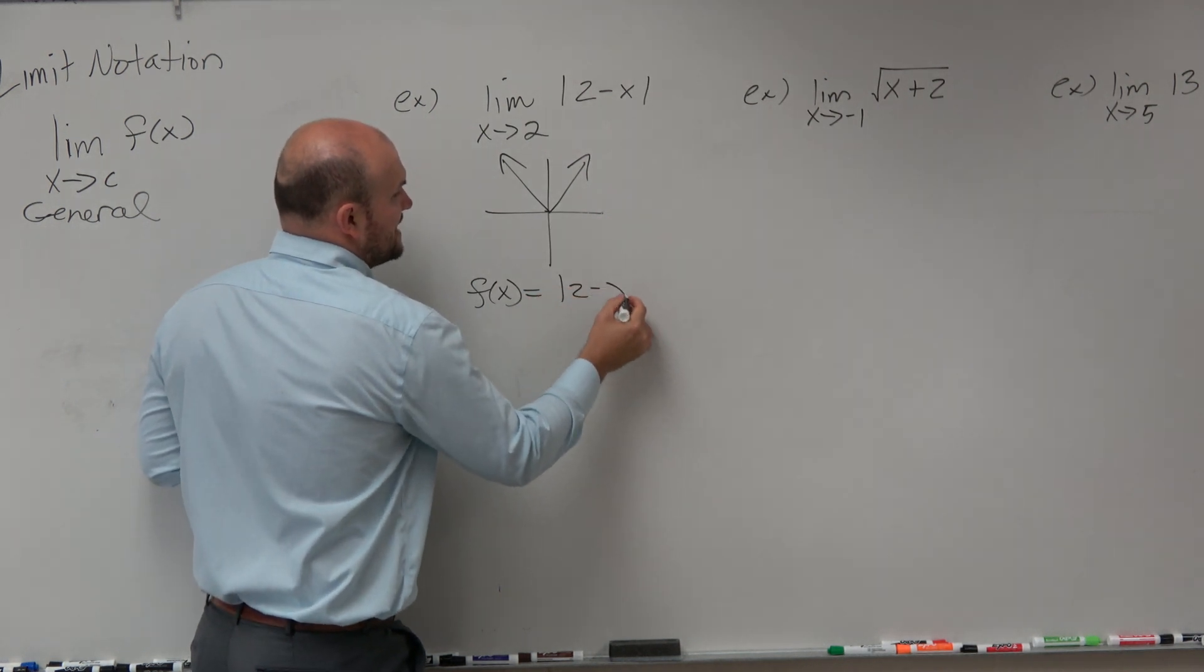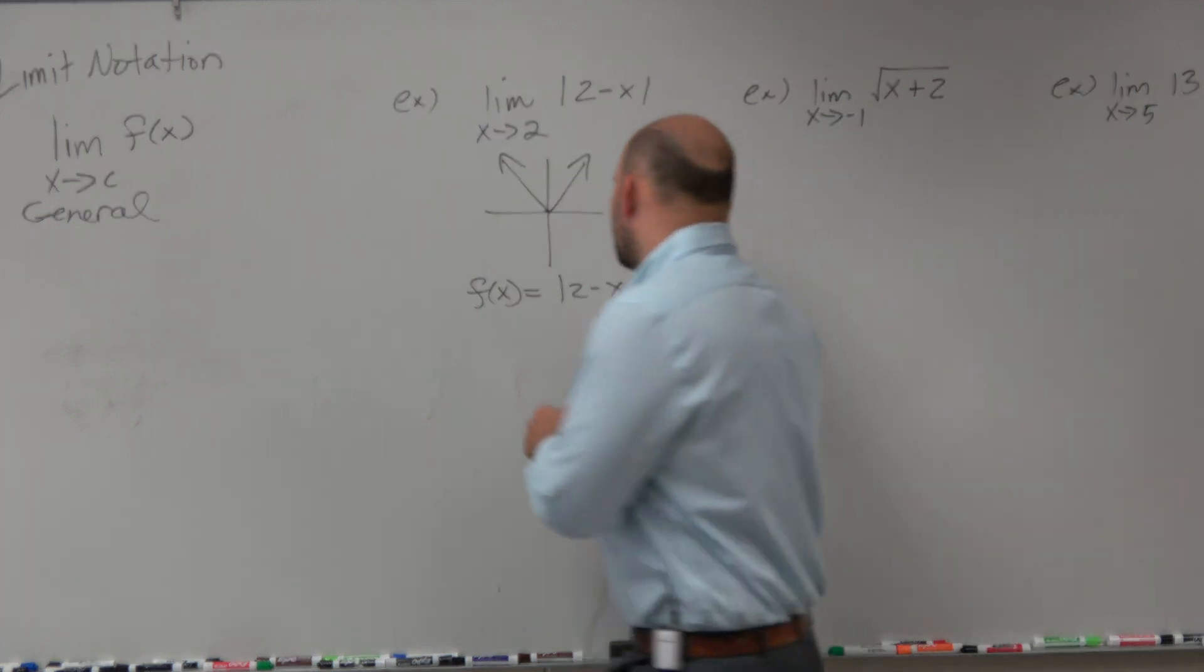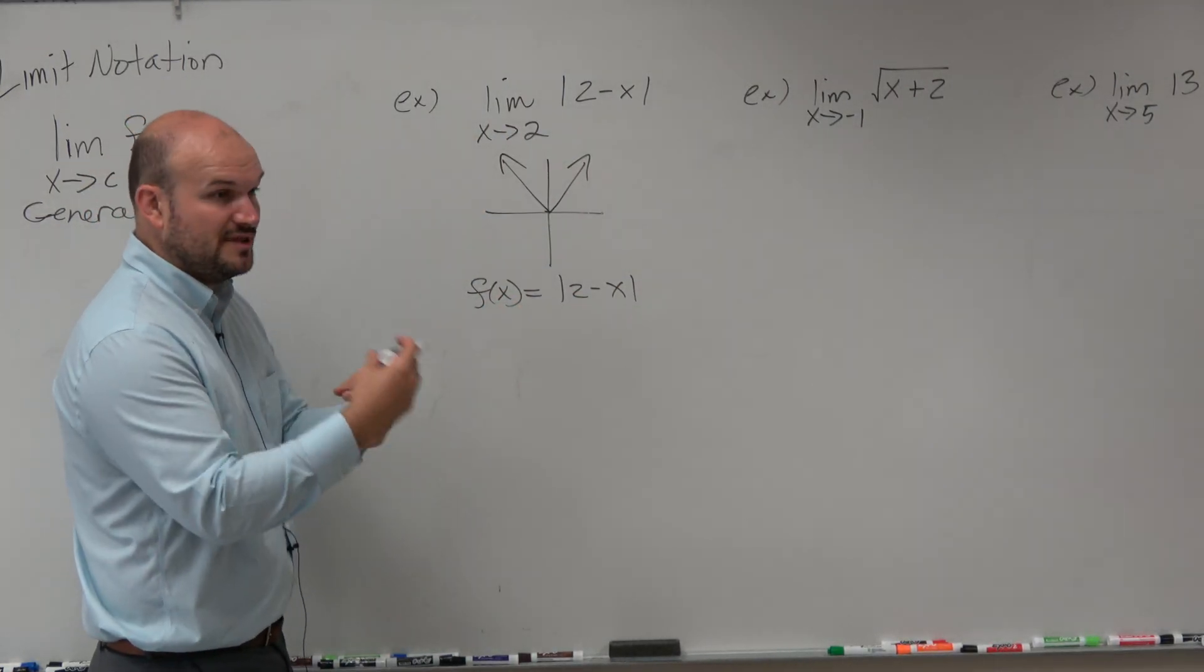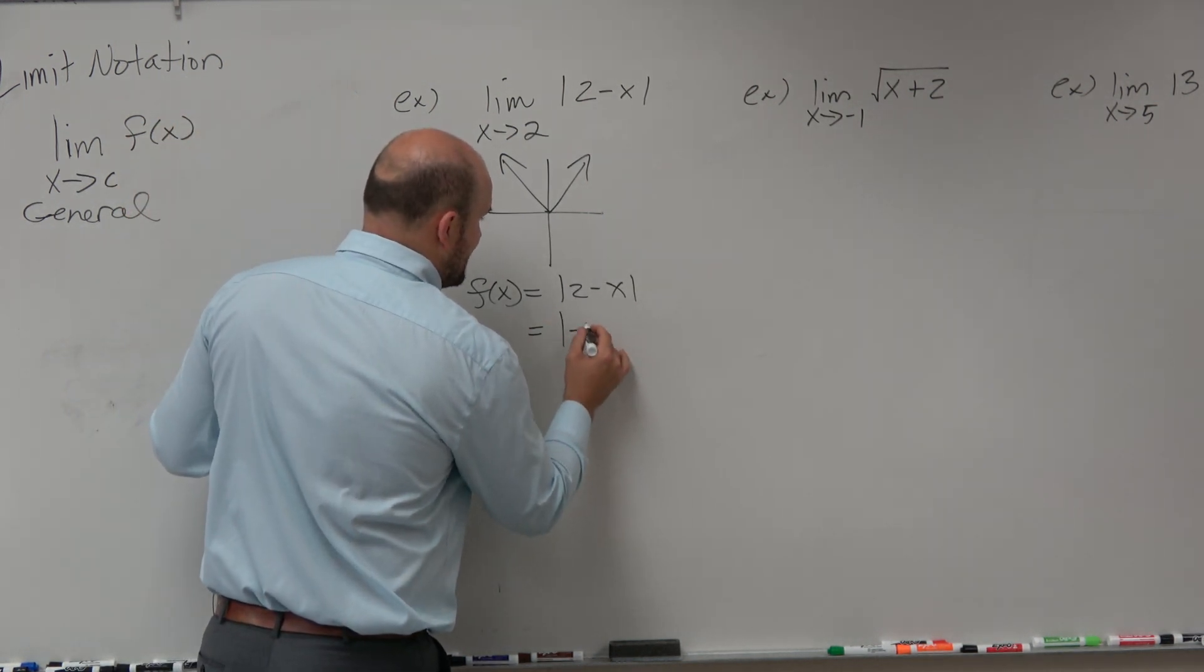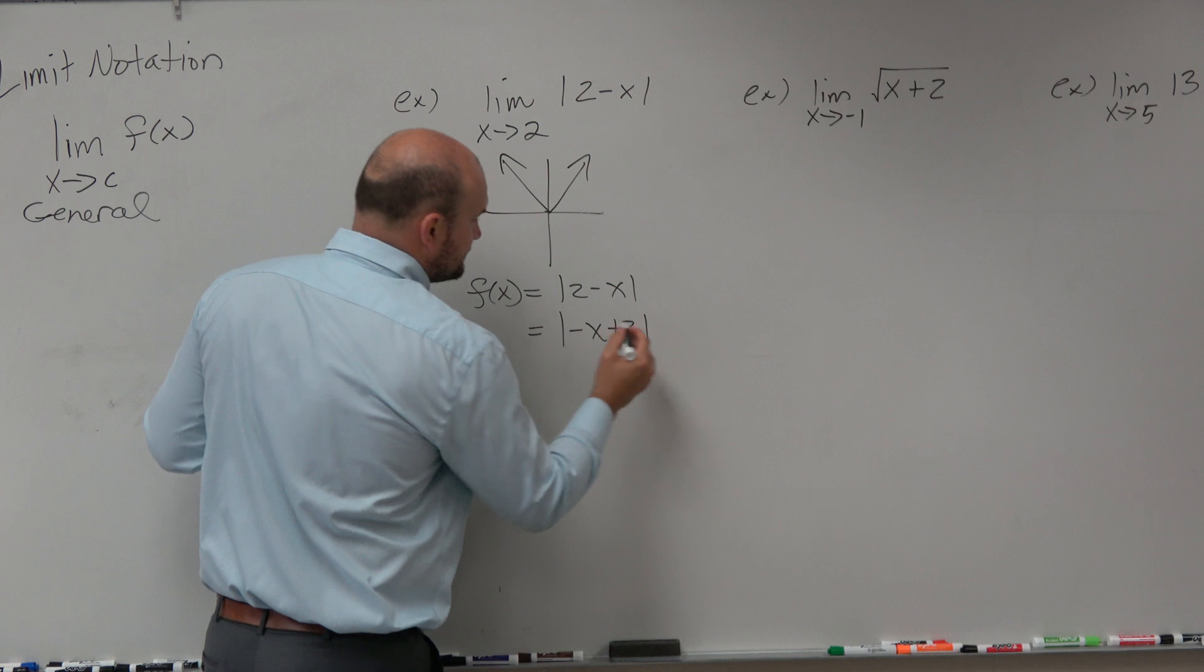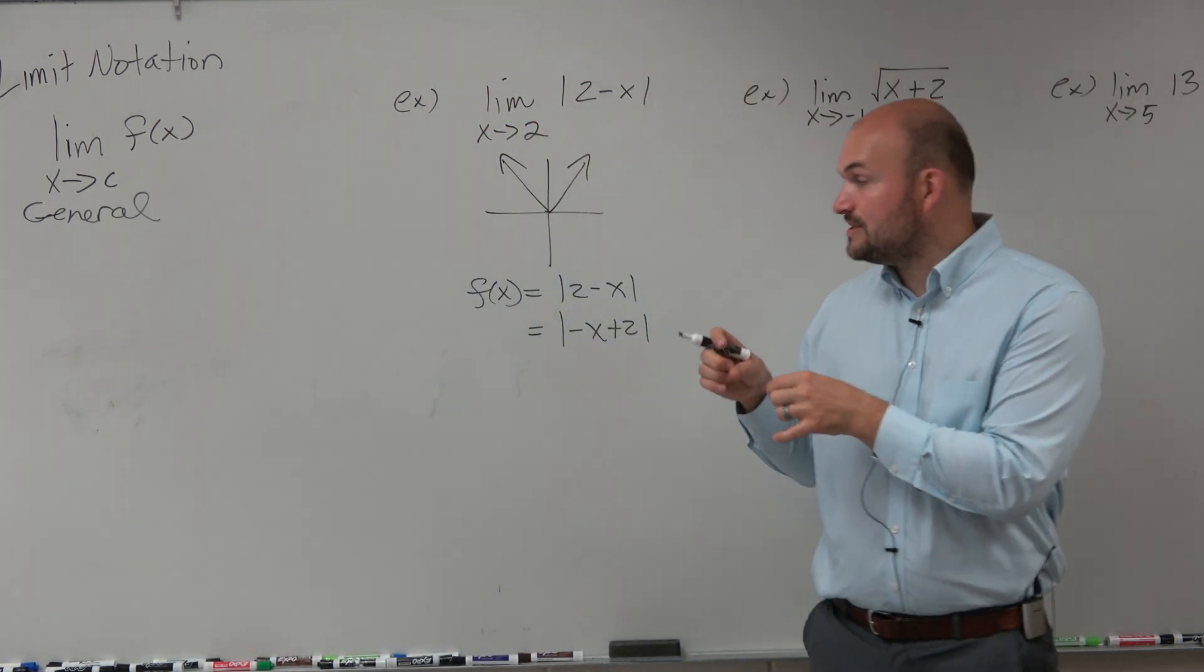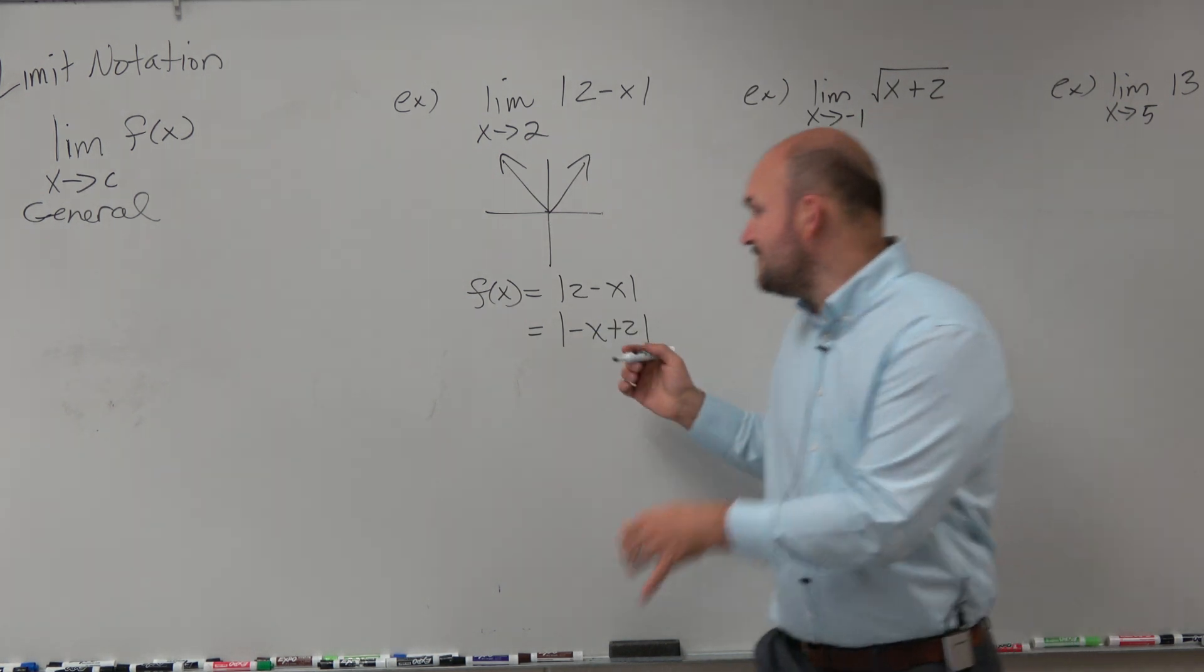If you're graphing 2 minus x, and this shows up in the review packet that's being passed around, make sure you put this into the x minus h format. So what I would do is I would rewrite this as negative x plus 2. And then we have to make sure that if we're going to transform this correctly, we've got to factor out this negative.